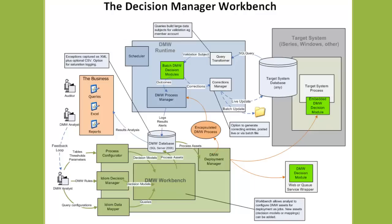One client using DMW is processing over 450,000 member database records, each with over 20 associated member-related tables, as well as their share of 800 million financial transactions on a daily basis — managing to do that in under two and a half hours. This process is executing 15 decision models comprising 161 distinct rule tests over the complete set of member data.